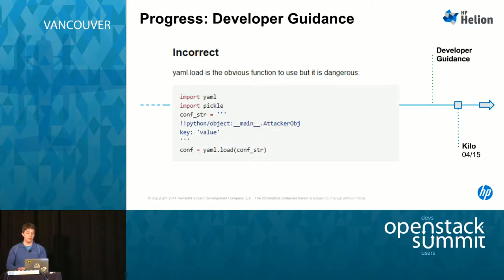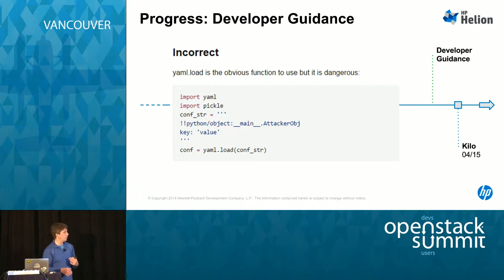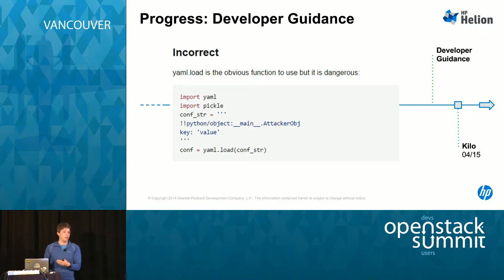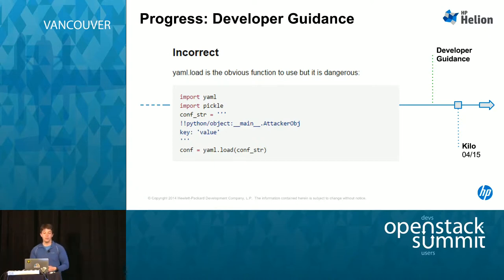Recently, we published developer guidance voiced in a more conversational tone for developers. They're linked off security.openstack.org and cover common security mistakes we've seen OpenStack developers making time and again. At some point these will be linked with Bandit, so when Bandit runs in the gate and flags something, instead of just saying 'bad thing, this one's red,' it'll also link to an explanation of why. These are all in a Git repo and can be updated as we move forward.